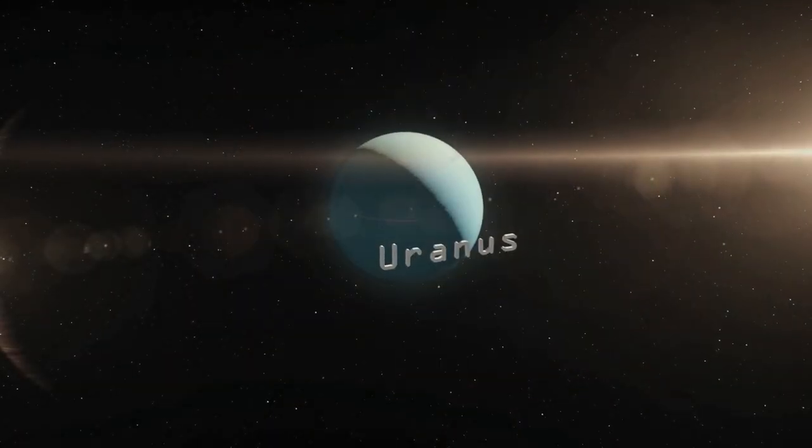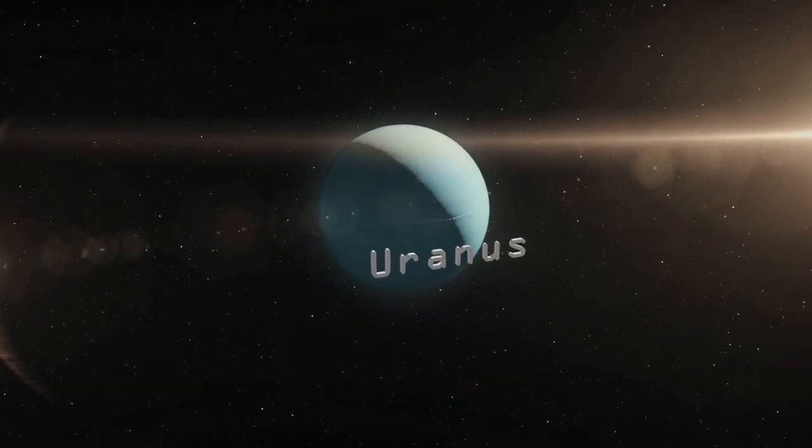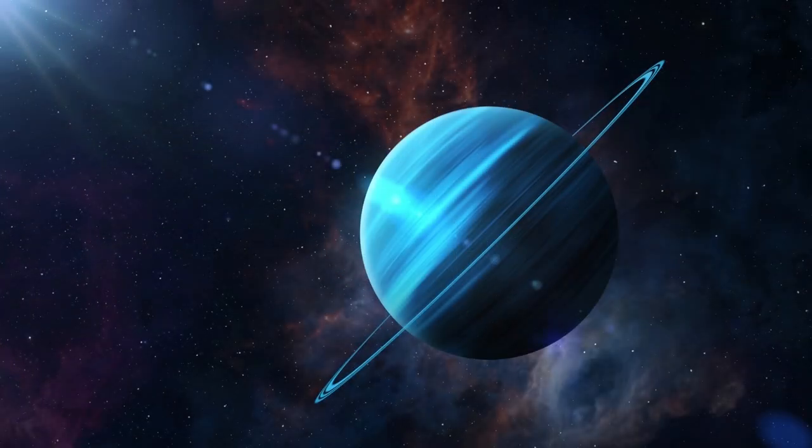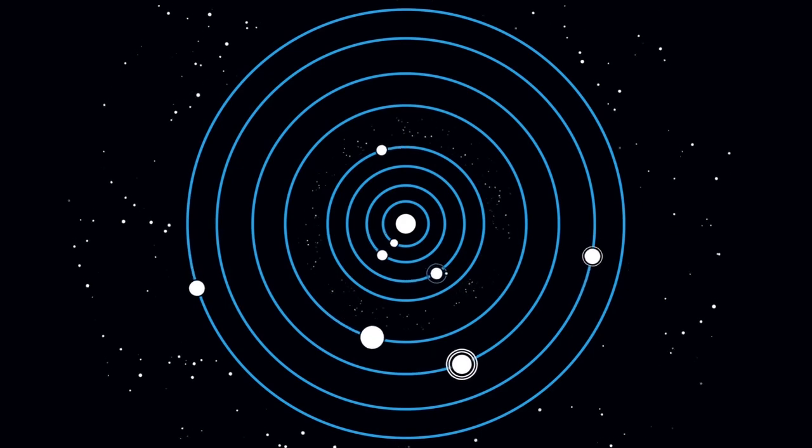One day on Uranus takes about 17 hours, the time it takes for Uranus to rotate or spin once. And Uranus makes a complete orbit around the sun, a year in Uranian time, in about 84 Earth years or 30,687 Earth days.